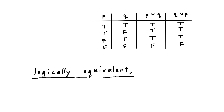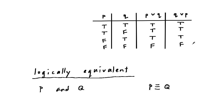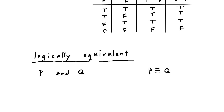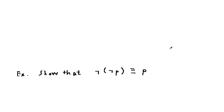If P and Q are two logically equivalent statement forms, then we write it using the logical equivalence notation. Let's do an example: show that NOT NOT P is logically equivalent to P.